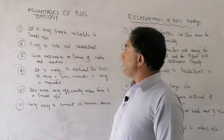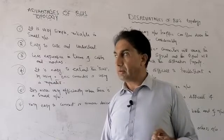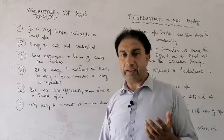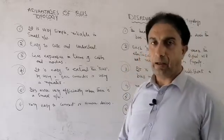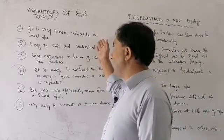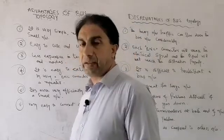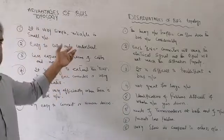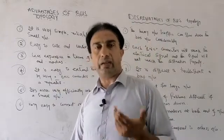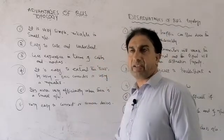The first advantage is that it is very simple, reliable, and suitable for small networks. This topology is very simple compared to star topology and ring topology. It is also very reliable and easy to use and understand, because there is just a main cable called the bus cable, and different systems are attached to it. The attachment is very simple with no difficulties.